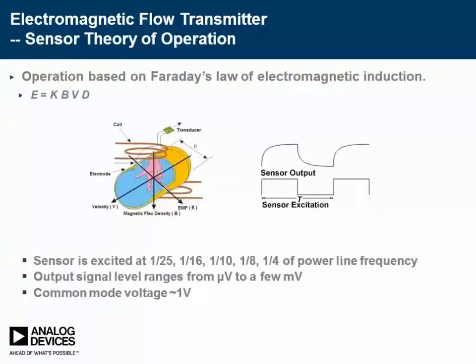Let's take a look at the theory of operation of the electromagnetic flow meters. The operation principle is based on Faraday's law of electromagnetic induction. It states that a voltage will be induced in a conductor moving through a magnetic field. The liquid serves as the conductor, and the magnetic field is created by energized coils outside the flow tube. The magnitude of the induced voltage is directly proportional to the velocity of the conductor, the diameter of the pipe, and the strength of the magnetic field.